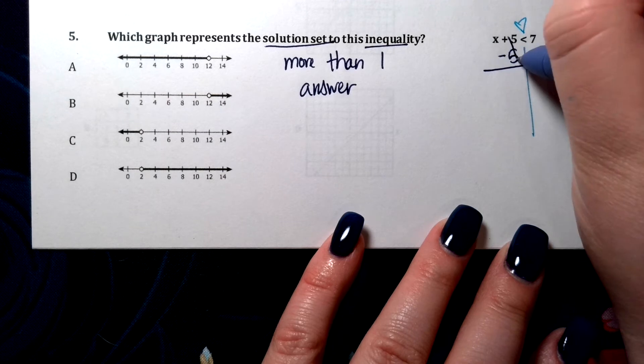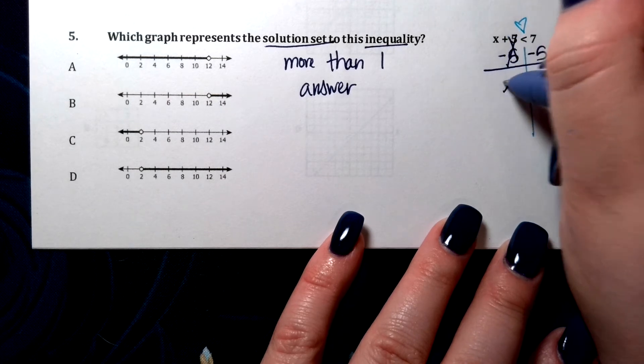I need to subtract 5 from both sides. 5 and 5, 0 is out. So all I'm left with is x on that side.